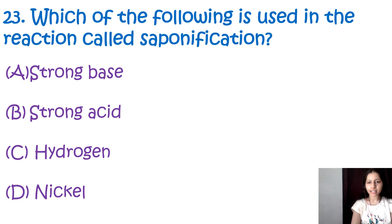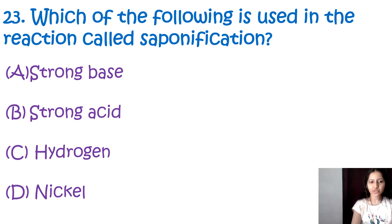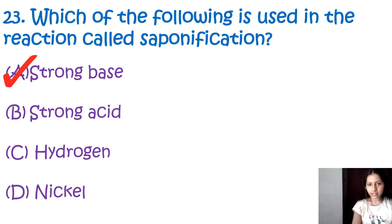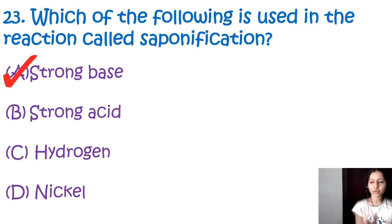Question number 23: Which of the following is used in the reaction called saponification? Strong base, strong acid, hydrogen, or nickel. The correct option is A, strong base. Saponification is a reaction in which the ester bonds found in fats and oils are hydrolyzed by a strong base such as sodium hydroxide or potassium hydroxide. This reaction produces soaps and glycerol.